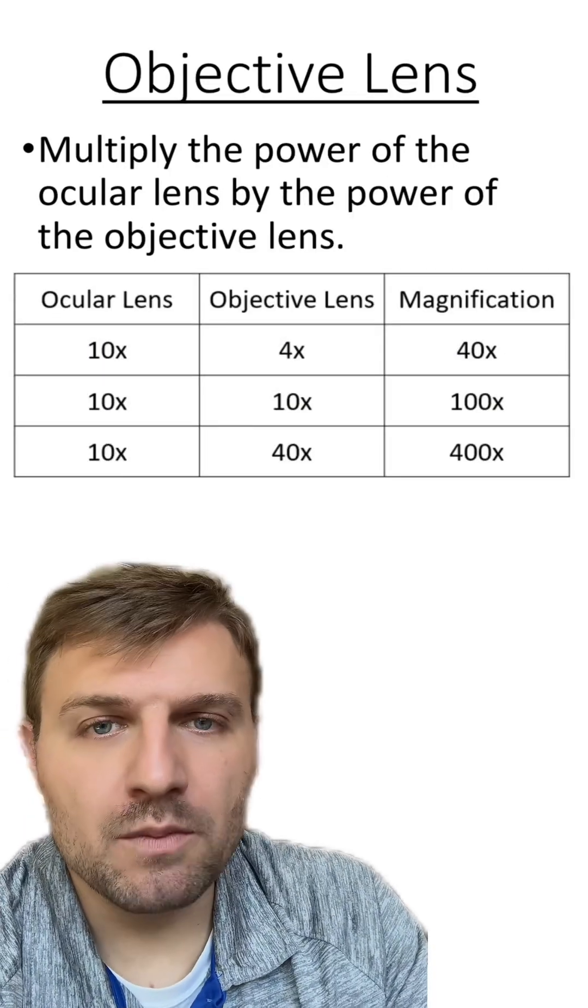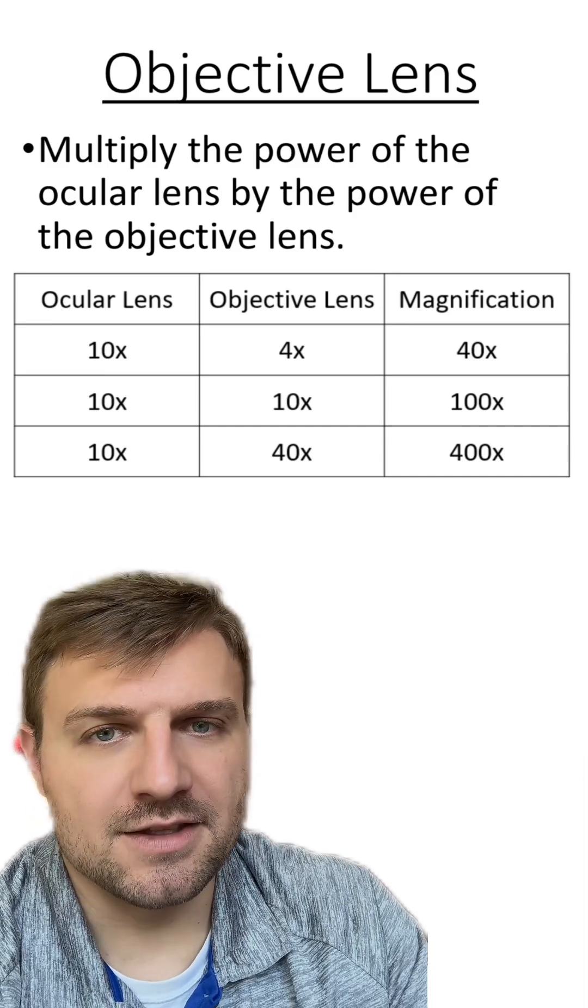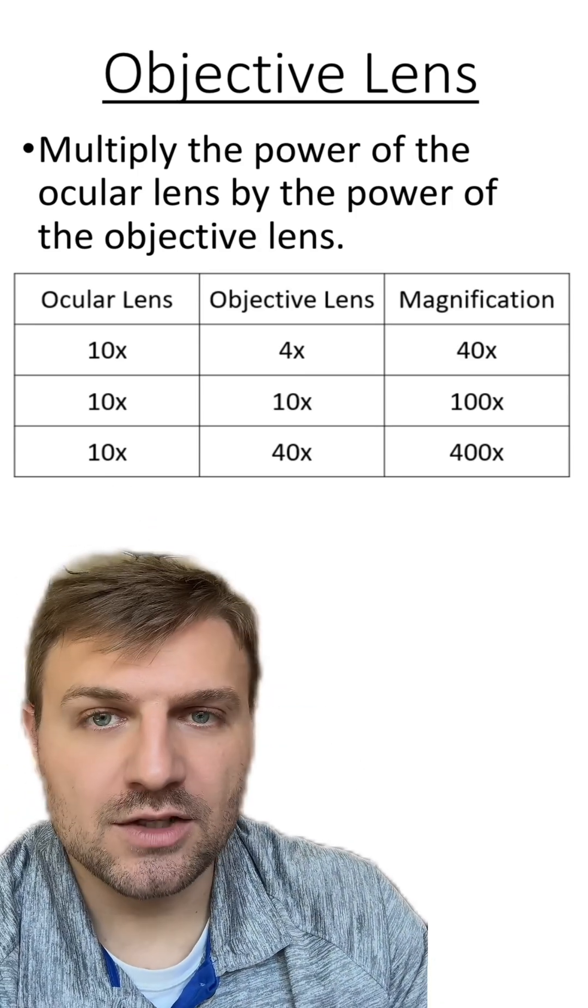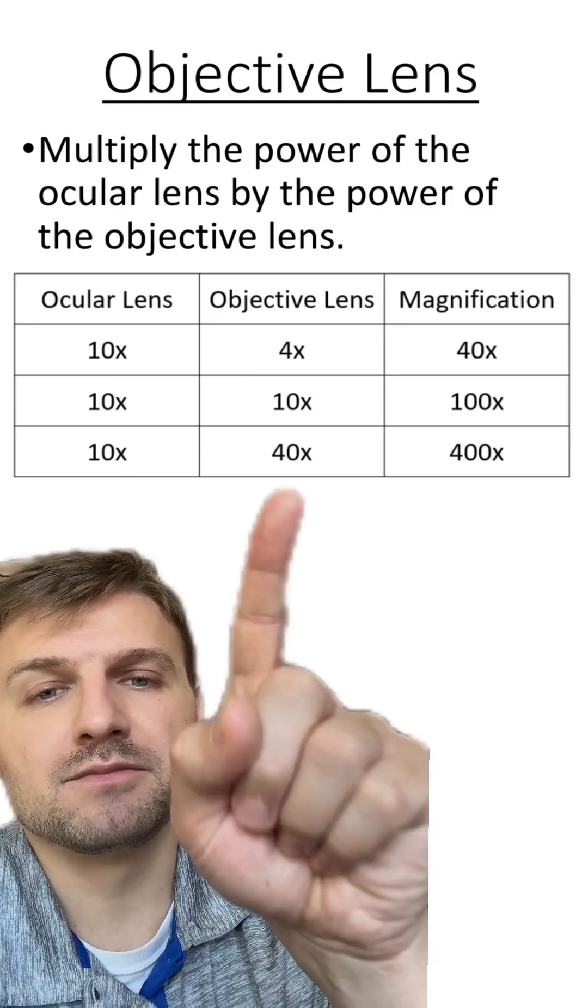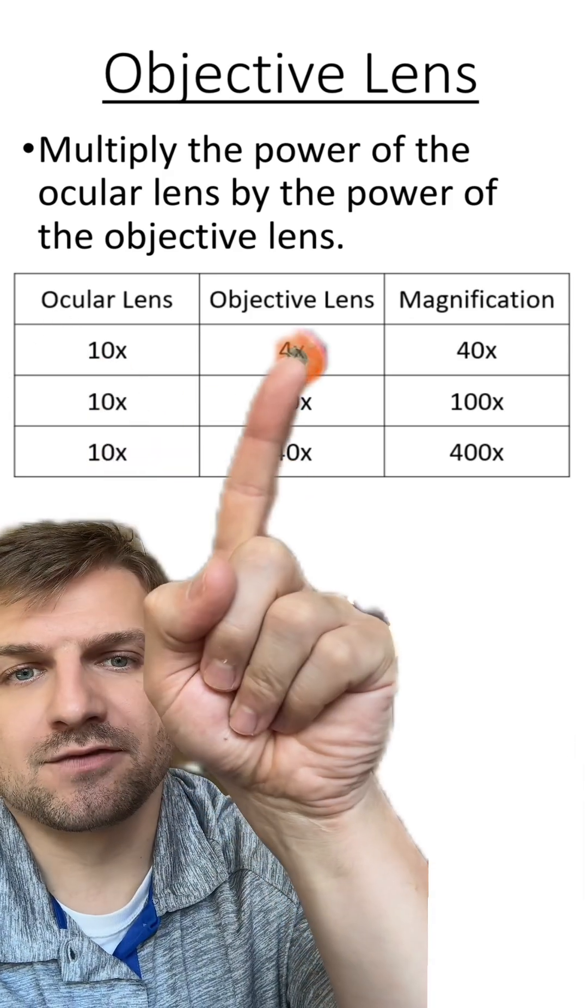How we determine the total magnification of a microscope is by multiplying the ocular and objective lenses. You can see, again, all of our ocular lenses are 10, since the ocular lens won't change. But we have three different types of objective lenses. We have the 4, we have the 10, and we have the 40.